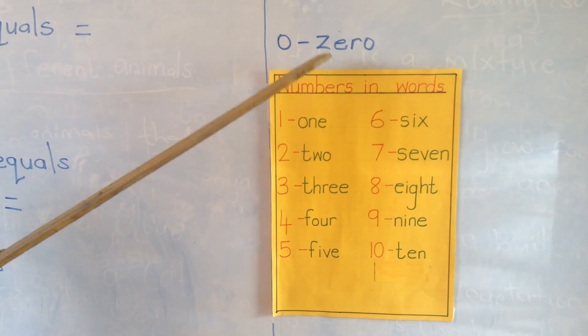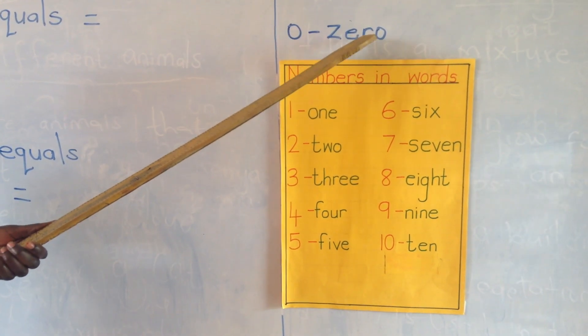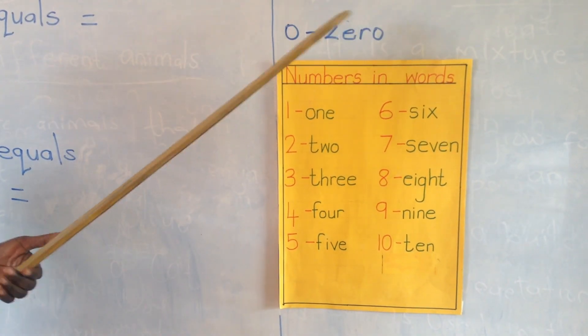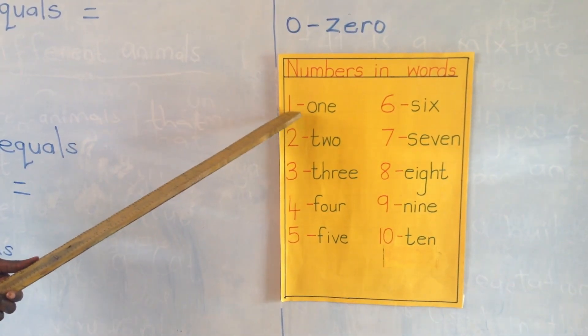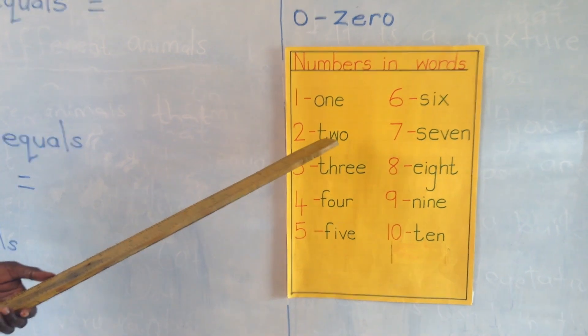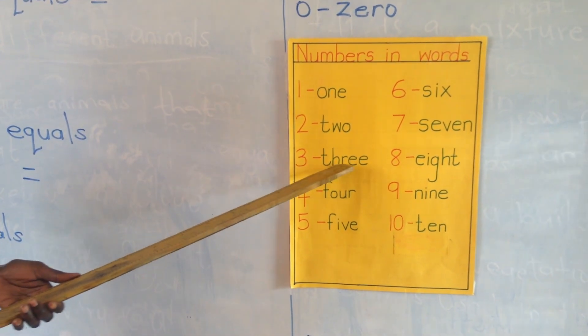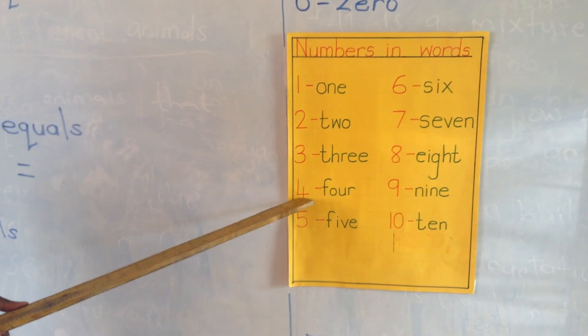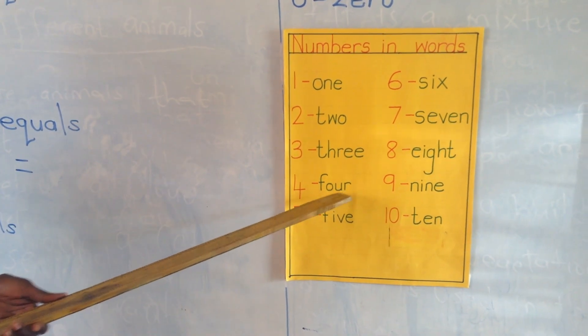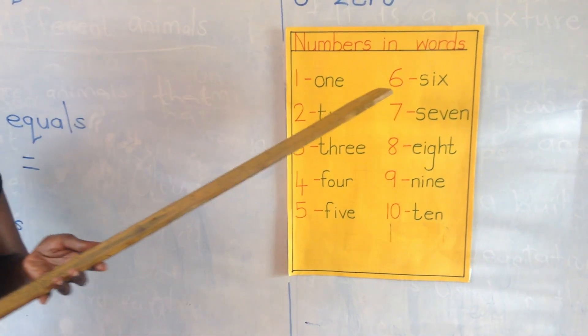The word zero will start with sound z, e, r, o. Number one, the word one. Number two, the word two. Number three, the word three. Number four, the word four. Number five, the word five.